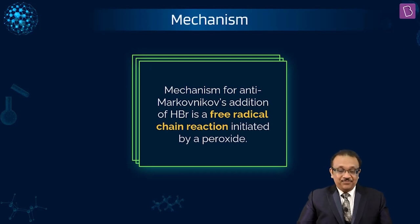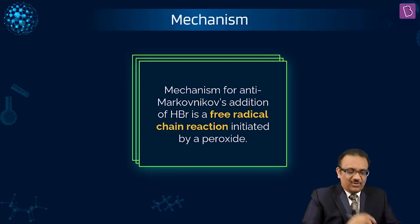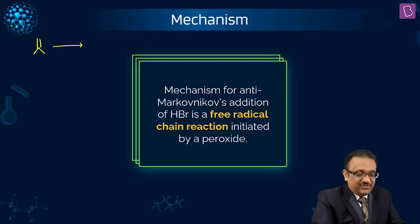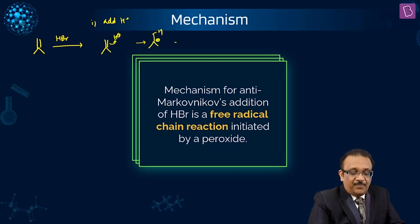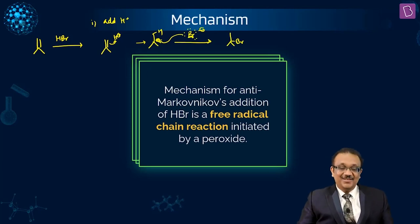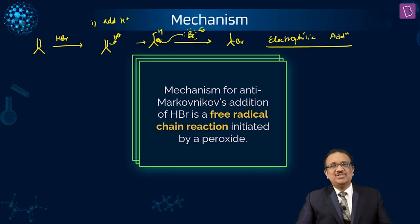Why does this happen? You can see this from the reaction mechanism. The mechanism is interesting. If you remember, I told you about HX addition earlier. If there is no Kharasch effect, no peroxide, and you just add HBR, the first step was: add H⁺. Then Br⁻ adds. That was the ionic mechanism — electrophilic addition mechanism. But free radical addition is a very different thing.